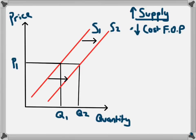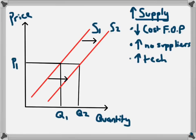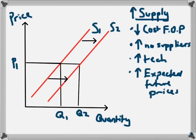The increase in supply could have been as a result of a decrease in the cost of factors of production. There are other things that could cause an increase in supply. Some examples could be an increase in the number of suppliers — more suppliers will lead to greater supply at each price level. It could also be an increase in the technology used in production, which means businesses can produce at a lower cost. Another factor would be expected future prices: if businesses expect prices to rise in the future, they will increase supply in order to cash in on those higher future prices.